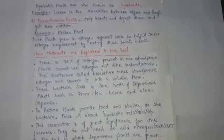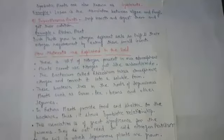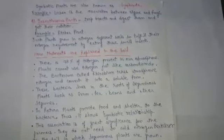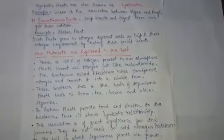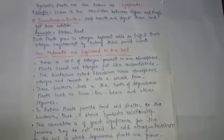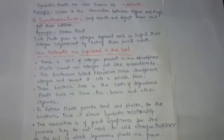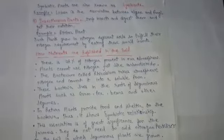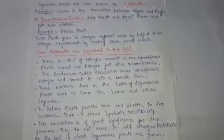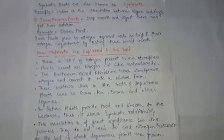Now the last category is insectivorous plants. There are few plants which can trap insects and digest them to get their nutrition. For example, pitcher plant. Actually, these plants can synthesize their own food by photosynthesis, but they grow in nitrogen-deficient soil.